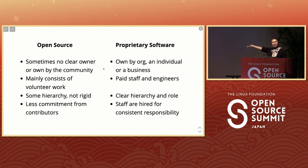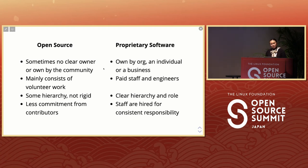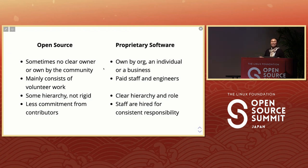In open source there's less commitment because contributors are all volunteers — they can come and go. When they're busy with other aspects of their life they can take a pause without applying for time off. But if you work writing code for a proprietary software company, because you're hired you have commitments — it's a constant responsibility. If you want time off you have to apply for it; you can't just say you're too busy.